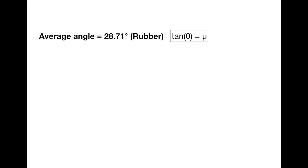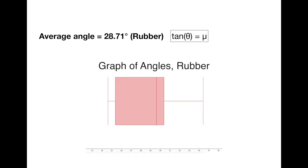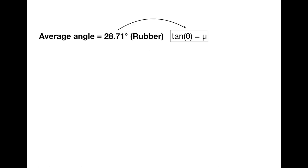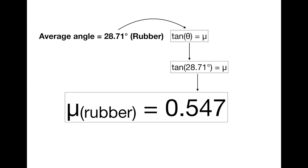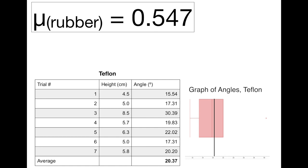Going back to the experiment, we found the average angle at which the x component of gravity is about to overcome the friction of rubber on pebbled ice is 28.71 degrees. Plugging it into the equations, we find that the coefficient of friction of rubber on pebbled ice is 0.547. We repeated the experiment with Teflon and found the average angle to be 20.37 degrees.